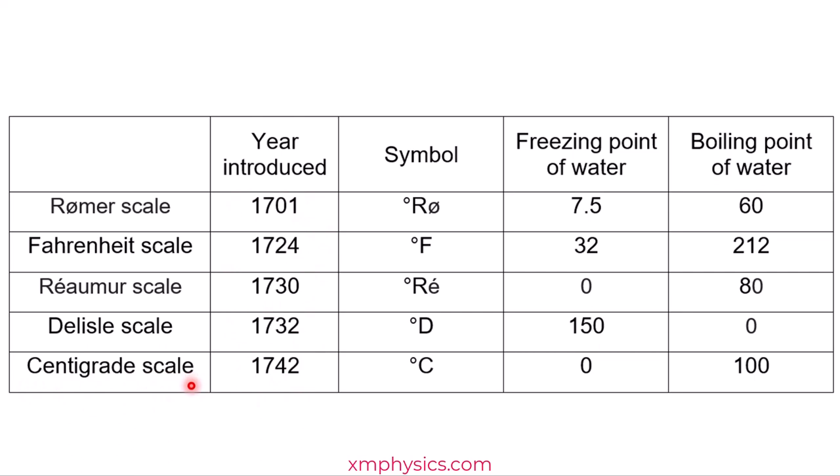The centigrade scale should look familiar to you because of its calibration points. So the 0 degree centigrade is the ice point and 100 degree centigrade is the boiling point and everything in between is divided into 100 equal intervals.